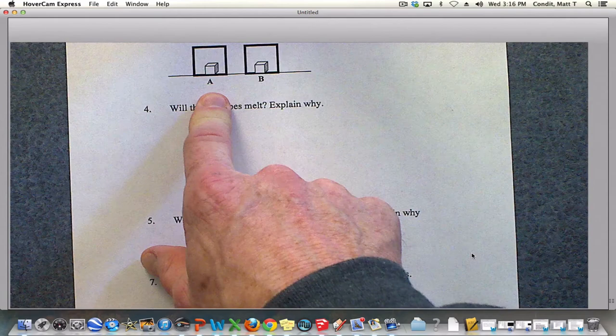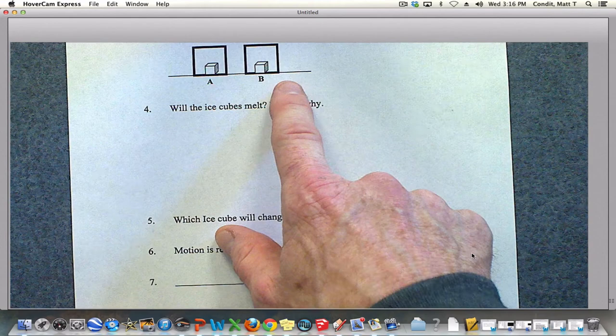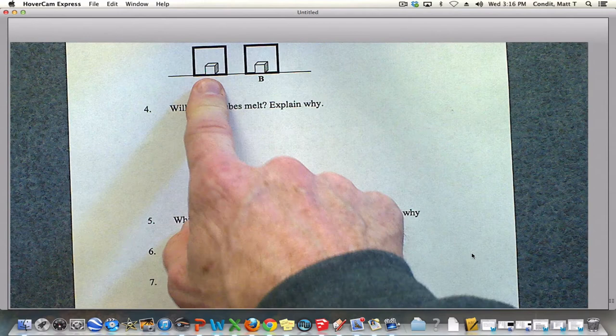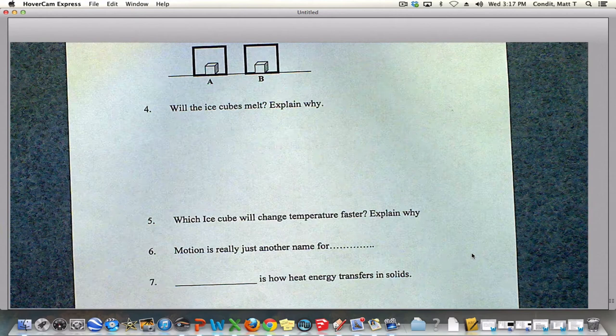Well, it's going to be ice cube A, because in the directions it said that this was in a steel container and this is in a wood container. Well, steel is a better conductor of heat, which means the heat can leave this one faster. So this one will have the temperature change the quickest because the heat can leave it the quickest because of the metal around it conducting the heat away.